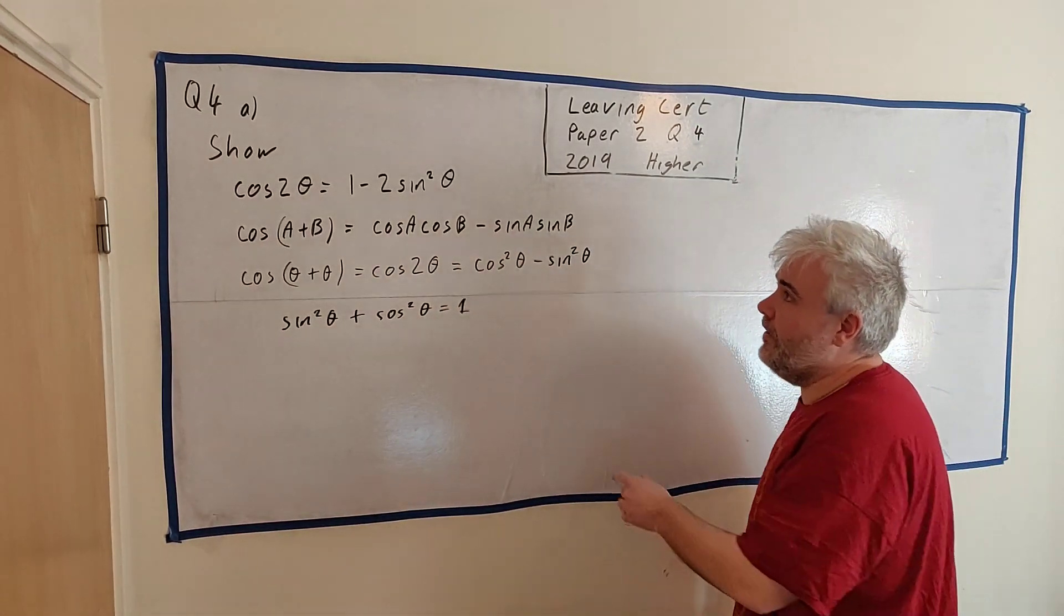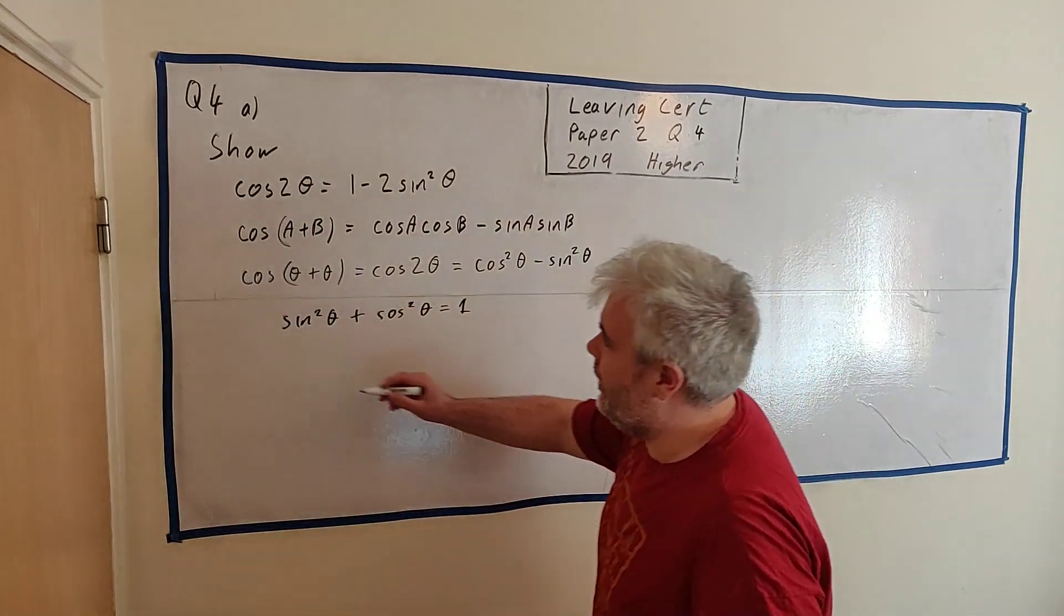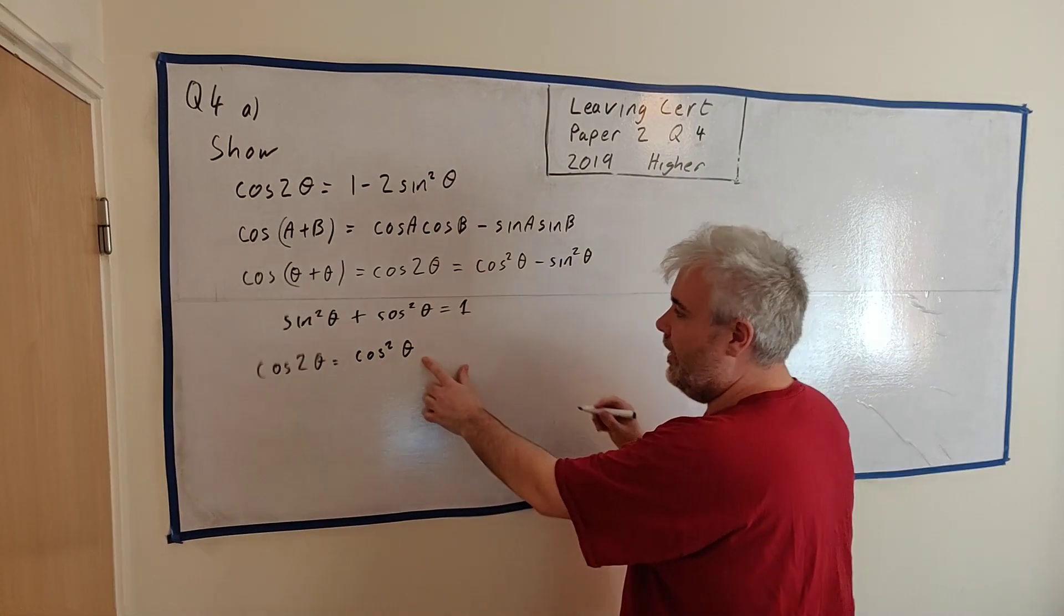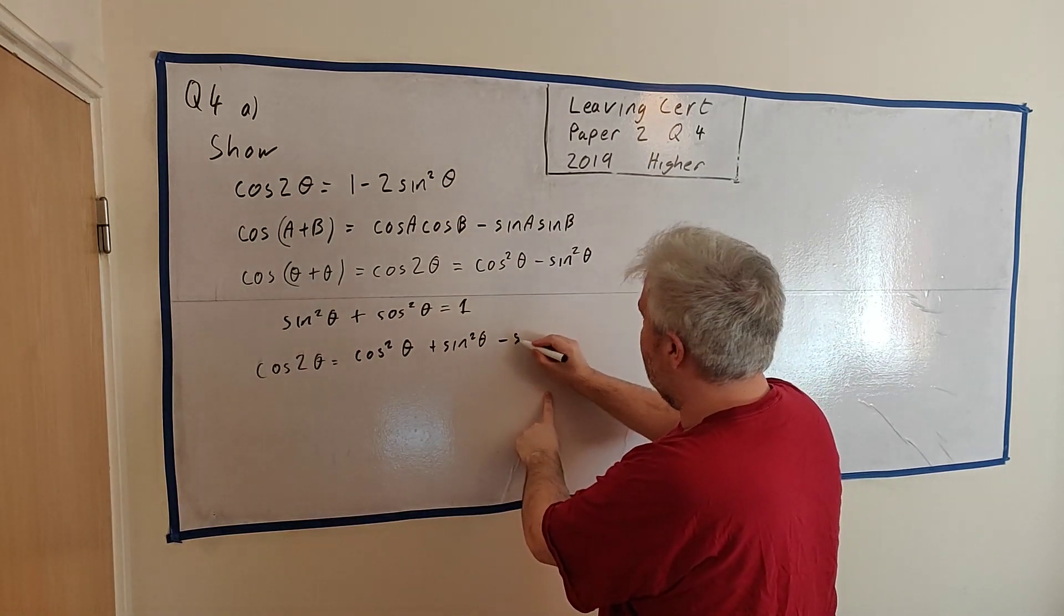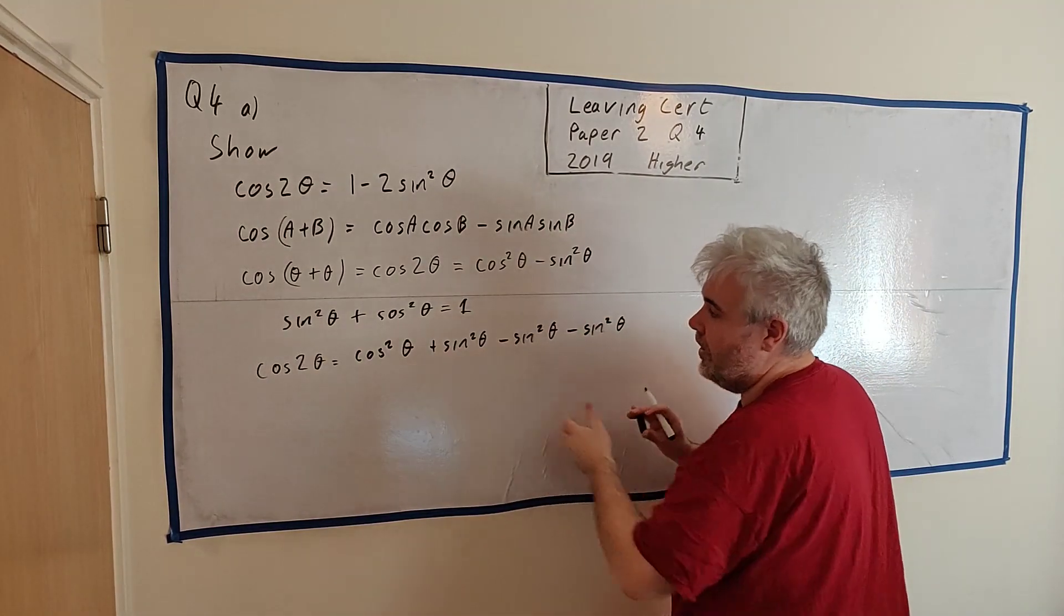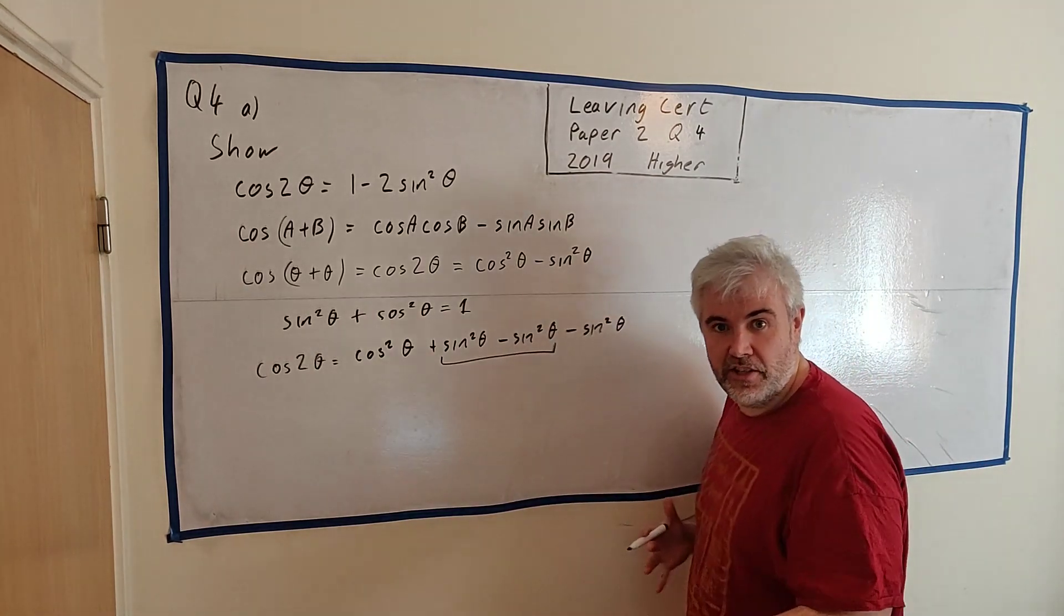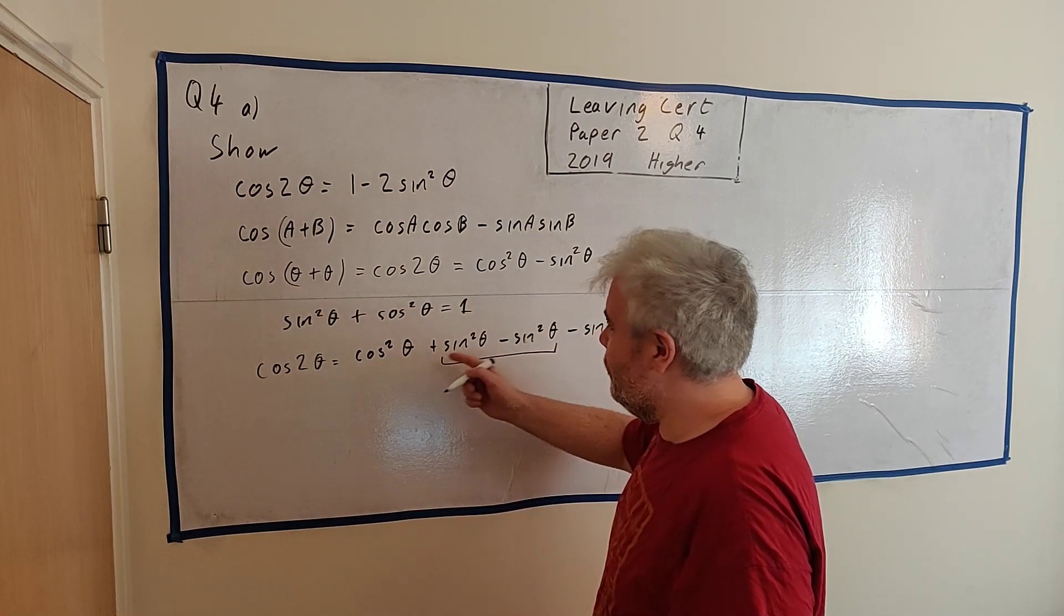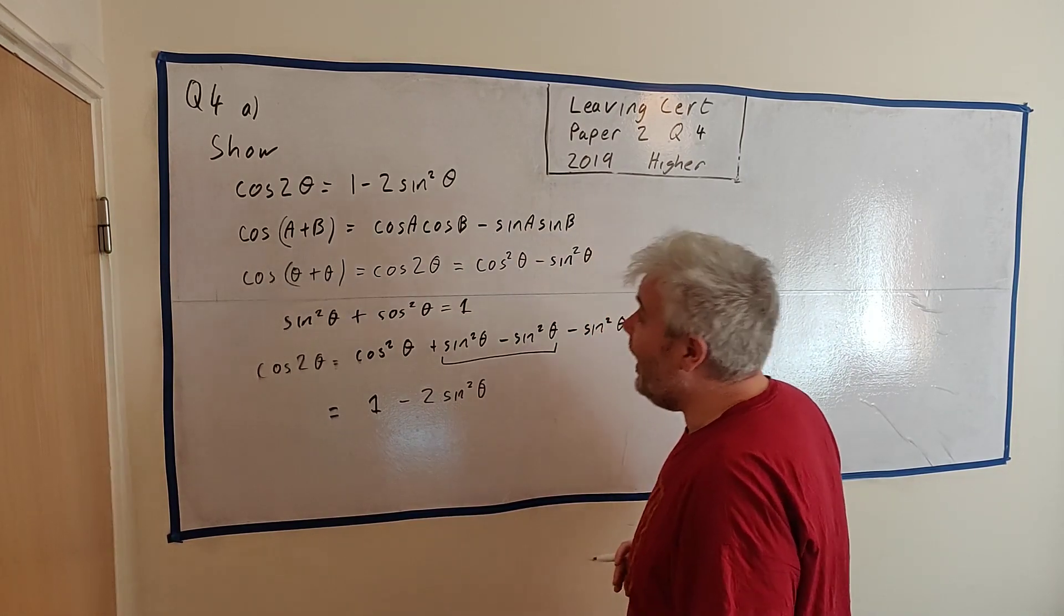And that will help us here. This cosine squared theta is only missing a sine squared theta. So we have cosine 2 theta equals cosine squared theta. I would love if I had plus sine squared theta here, so I've added that plus in. I've put it plus sine squared and taken away a sine squared. So I haven't really changed anything. I've added one in and taken it away. But if I put these two together, I will get 1, and if I put these two together, I will get minus 2 sine squared theta.